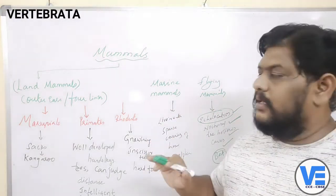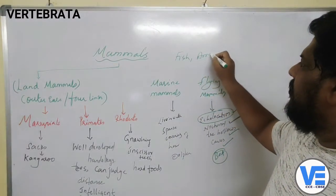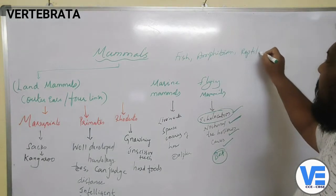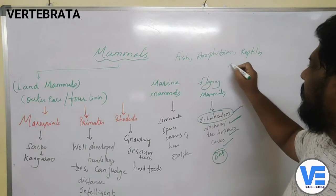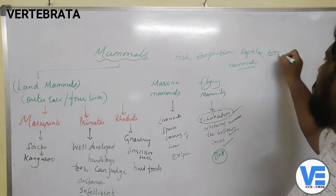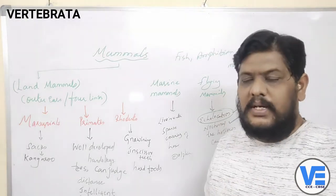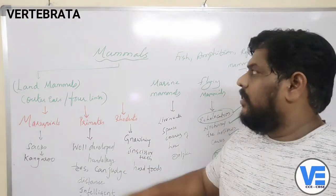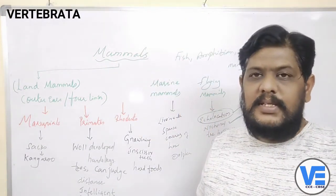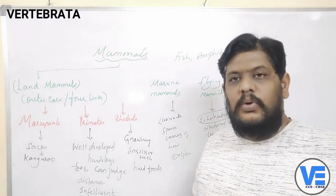This is all about the Vertebrata. In Vertebrata we have already seen fish, amphibians, reptiles, aves, and now Mammalia with its different groups. All these are examples of Vertebrata. Vertebrata is a subphylum of Chordata, and these are the classes present in it — and that is how we come to the end of the Vertebrata topic.